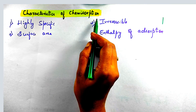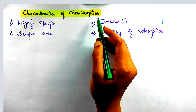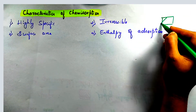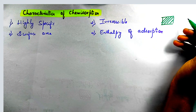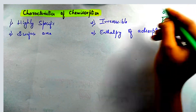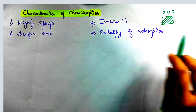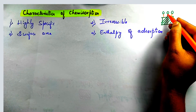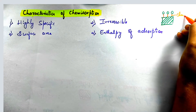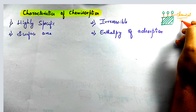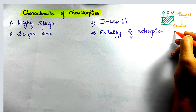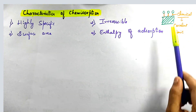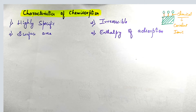Characteristics of chemisorption. In the last video, I discussed about the characteristics of physical adsorption, that is physisorption. In physical adsorption, the gas molecules accumulate on the surface by weak Van der Waal force. But in chemical adsorption, that is chemisorption, the accumulation of gas molecules on the surface is by chemical bonding — which is a strong bond. It may be covalent or ionic bond. These are the strongest bonds, and the characteristics depend upon the bond strength.